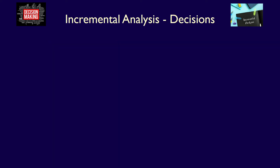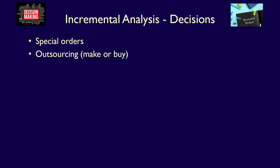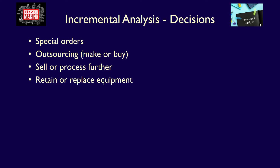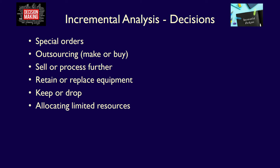What types of short-term decisions can we apply incremental analysis to? We can use it to decide whether to accept or reject a special order from a customer, whether to make a part or buy it from an outside supplier, whether to sell a product as-is or process it further, whether to keep old equipment or scrap it and buy new, whether to keep or discontinue an existing product line, and finally, when facing a scarce resource, which products to produce first. All of these short-term decisions use incremental analysis, and I'll cover them all in future videos.